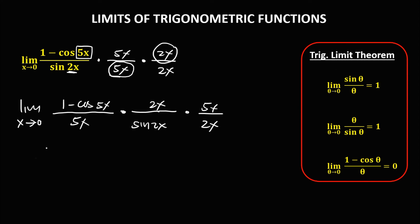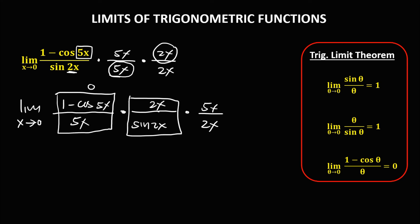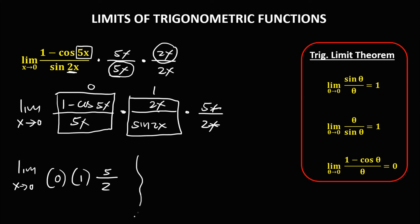Using the theorem, 1 minus cosine 5x over 5x equals 0. And 2x over sine 2x equals 1. Then cancel x in 5x over 2x to get 5 over 2. Since 0 times 1 is 0, and 0 times 5 over 2 is 0, the limit is equal to 0.